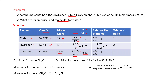Now find the relative number of moles by dividing each value by the smallest. The smallest value is 2.02. So: carbon gives 2.02 ÷ 2.02 = 1; hydrogen gives 4.07 ÷ 2.02 ≈ 2; chlorine gives 2.02 ÷ 2.02 = 1. The whole-number ratio is 1:2:1. If values are fractional, multiply by an integer to get whole numbers. From this ratio — 1 carbon, 2 hydrogen, 1 chlorine — the empirical formula is CH₂Cl.